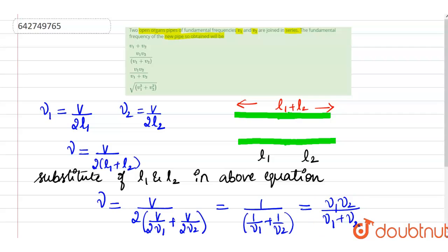So when two pipes are joined in series, the fundamental frequency will be equal to ν = ν1ν2/(ν1 + ν2). According to the given options, it is going to be the third option which is correct. Thank you all.